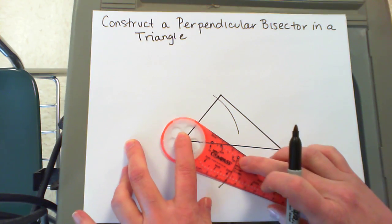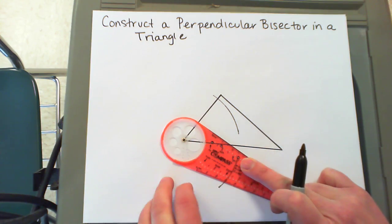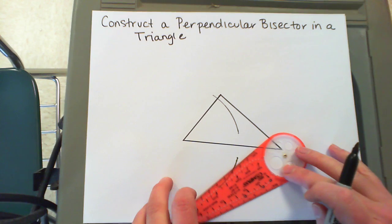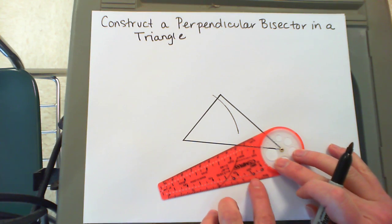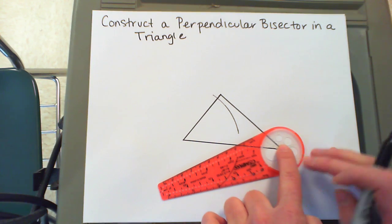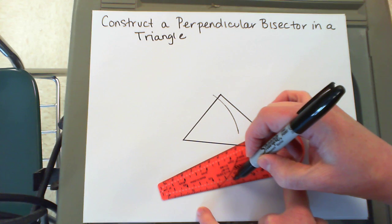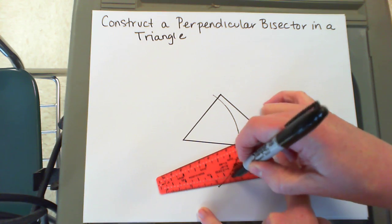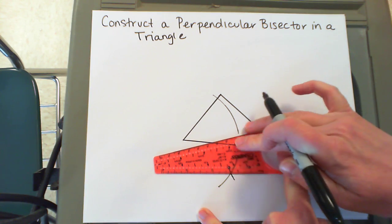Using that same compass setting, place your compass on the other endpoint of that side. You're going to use the same arc. You want two intersections, one below and one above.